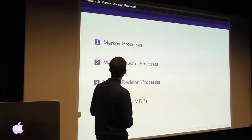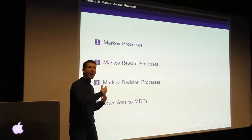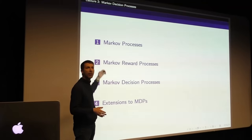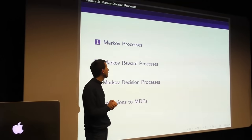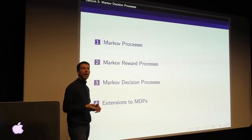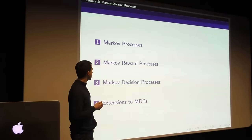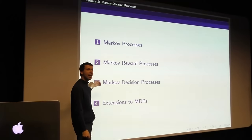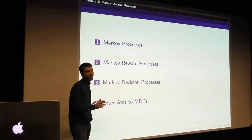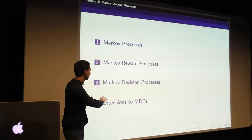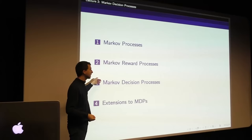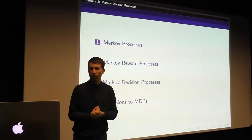A rough outline for today's class: we'll start by layering on more and more complexity, beginning with a basic idea — a Markov process or Markov chain. Then we'll introduce ideas essential to reinforcement learning: first adding rewards to give a Markov reward process, then adding actions to give a Markov decision process. There are also extensions to MDPs, like partial observability, covered in the lecture notes.